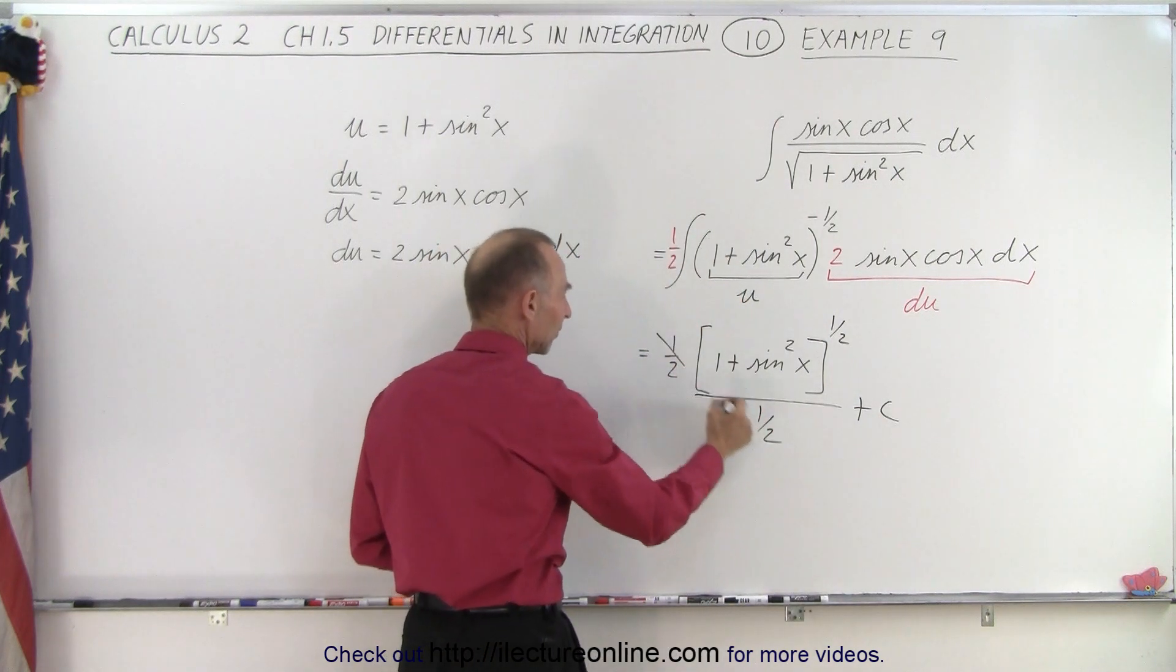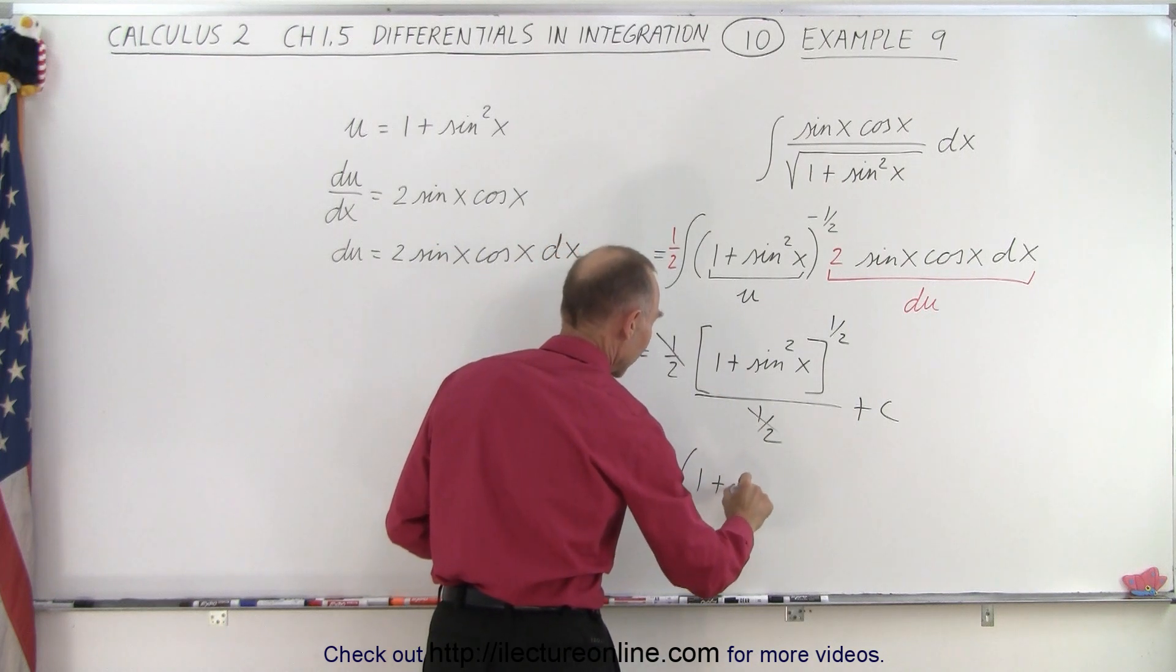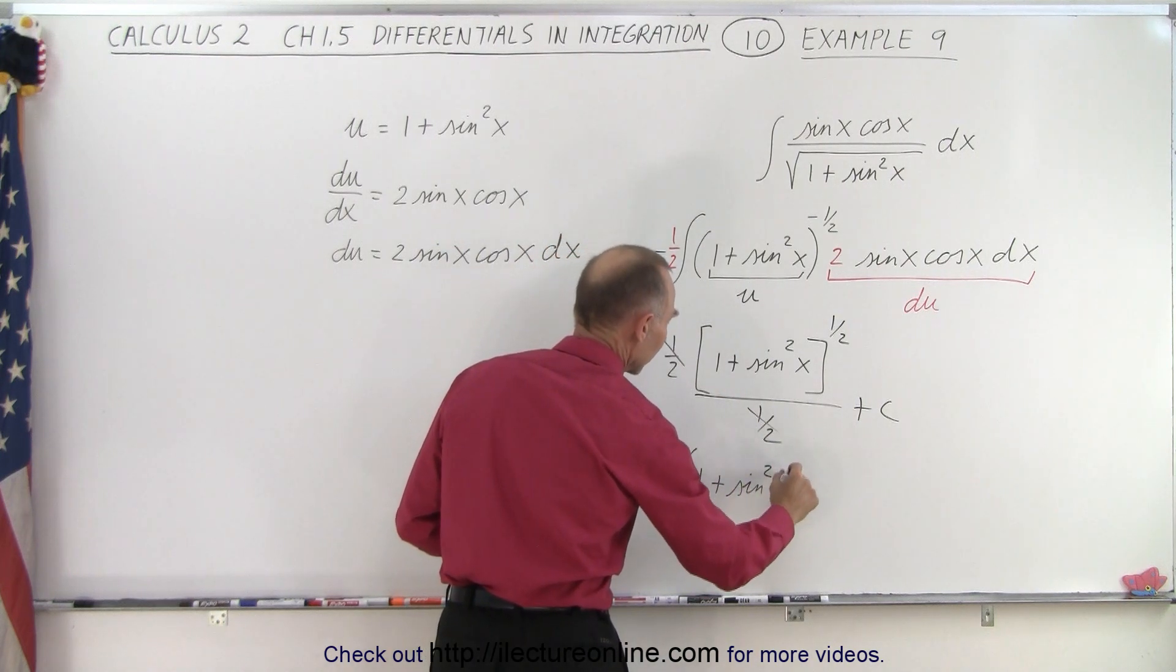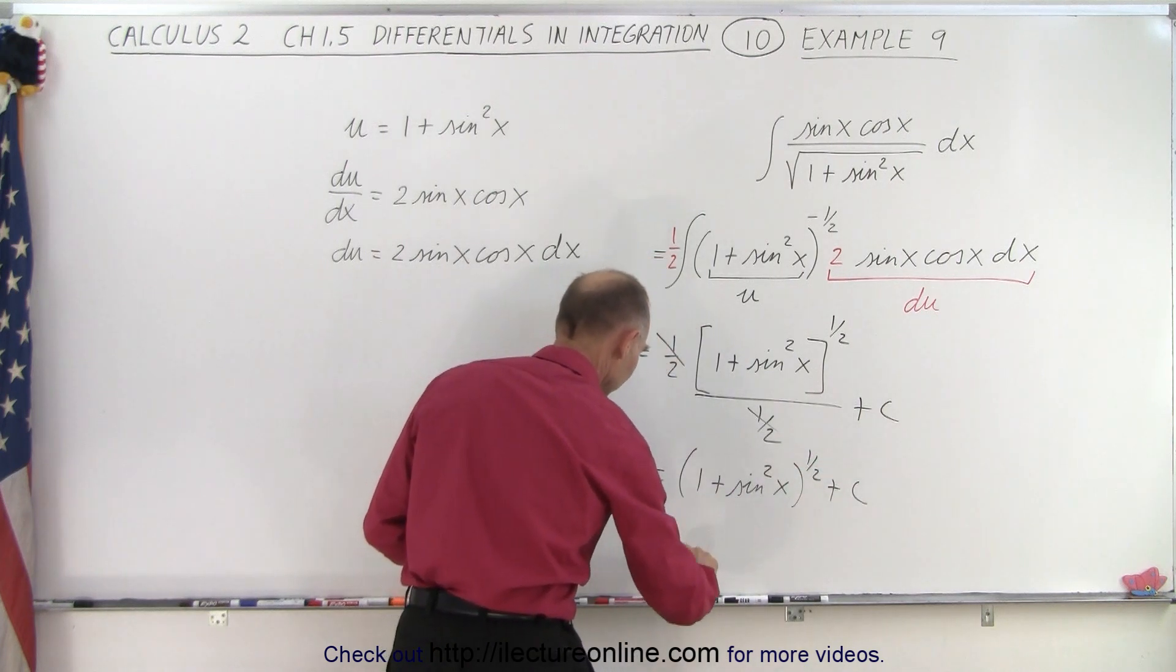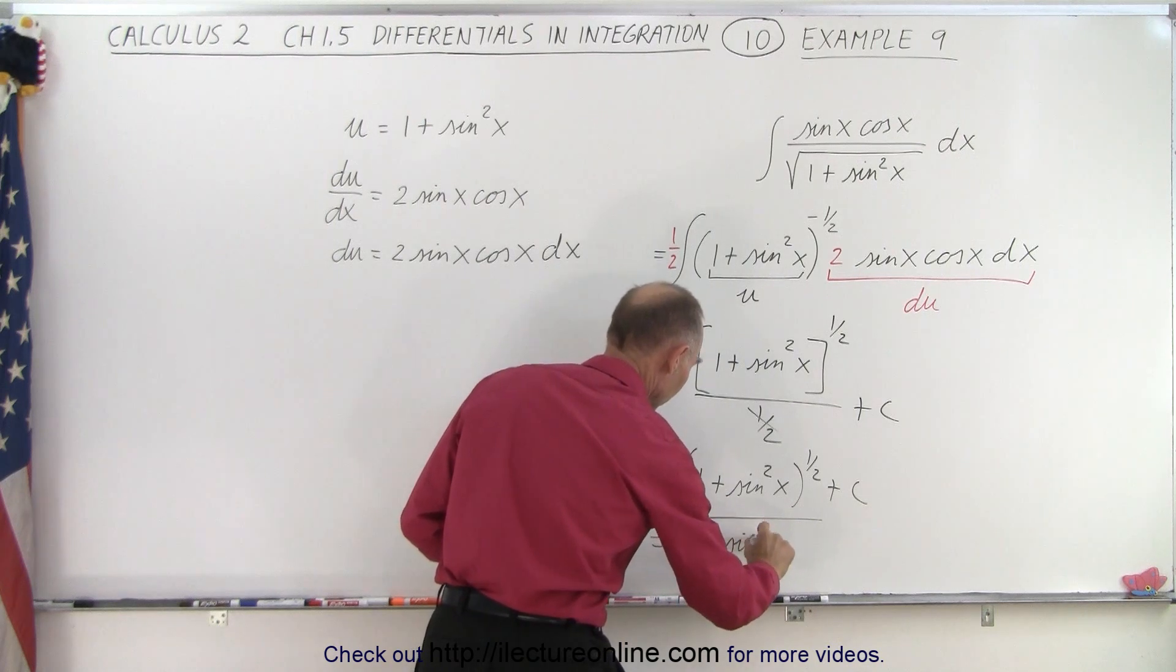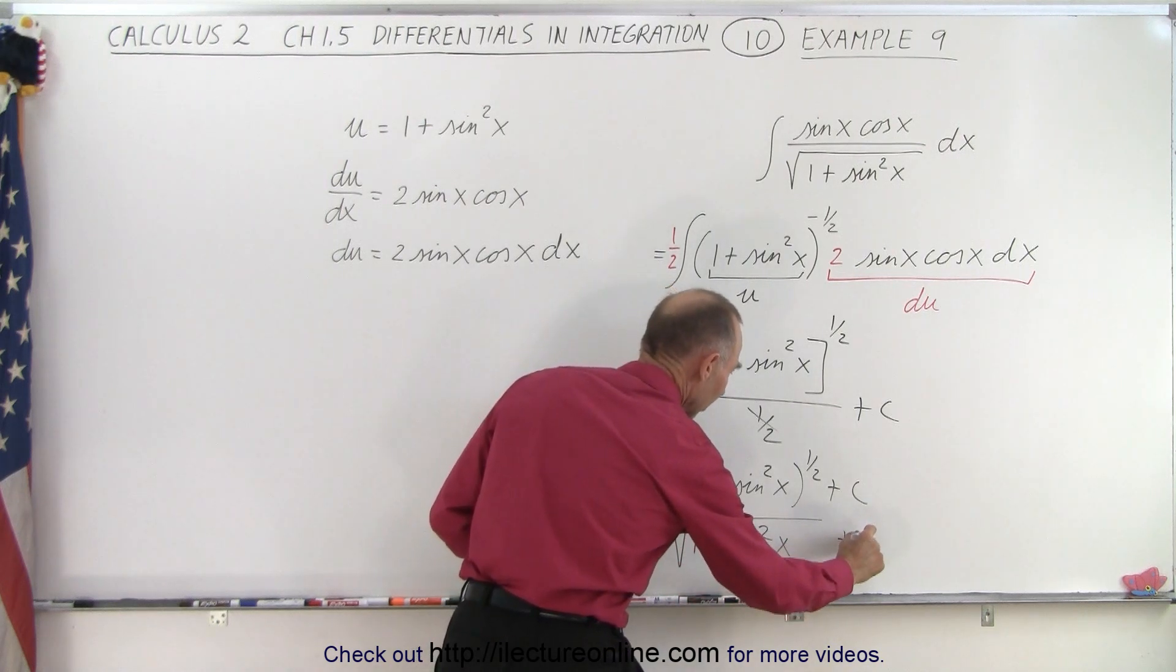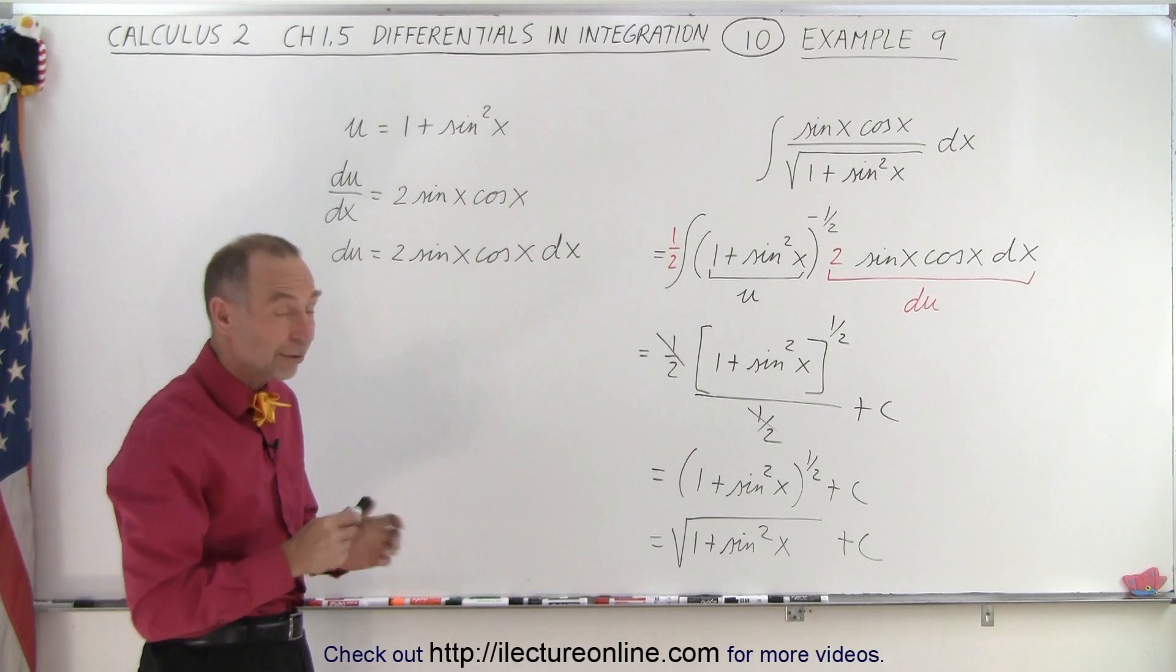You can then see that the 1 halves cancel out, and so you're left with 1 plus the sine square of x to the 1 half power plus the constant of integration. Or if you like the radical better, you could say the square root of 1 plus the sine square of x plus a constant of integration. And so that's how we integrate something like that.